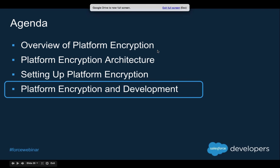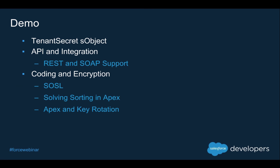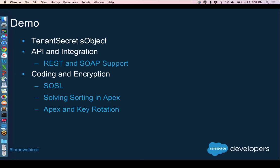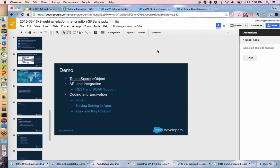Quickly jumping over to platform encryption and development. There is a standard Salesforce object called TenantSecret added to your org when you use platform encryption — that's where your tenant secret is stored. It is API enabled, as are all of your encrypted text fields. I'll also show some functionality with SOSL, including a use case around how to solve sorting. With the type of encryption we're doing, doing an ORDER BY in SOSL is pretty much impossible, but you can still solve that problem by doing something within Apex. I'll wrap up by showing a solution with Visualforce and Apex for key rotation.